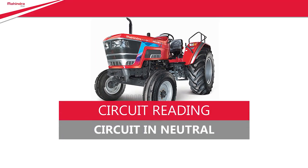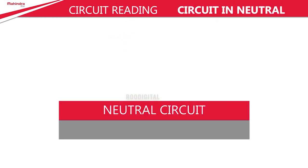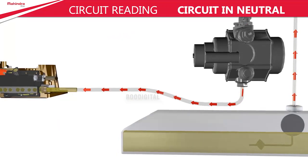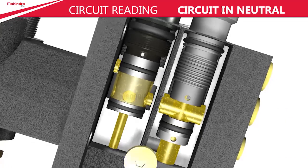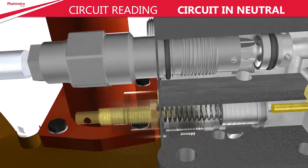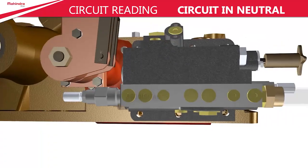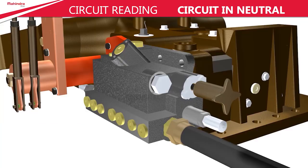This is the neutral circuit. In this circuit, the flow of oil from the pump is diverted back to the reservoir through the control valve. This is done due to non-requirement of oil in the circuit.